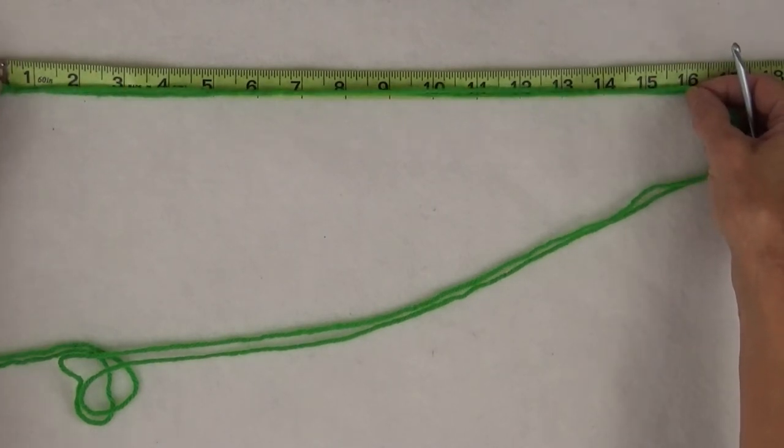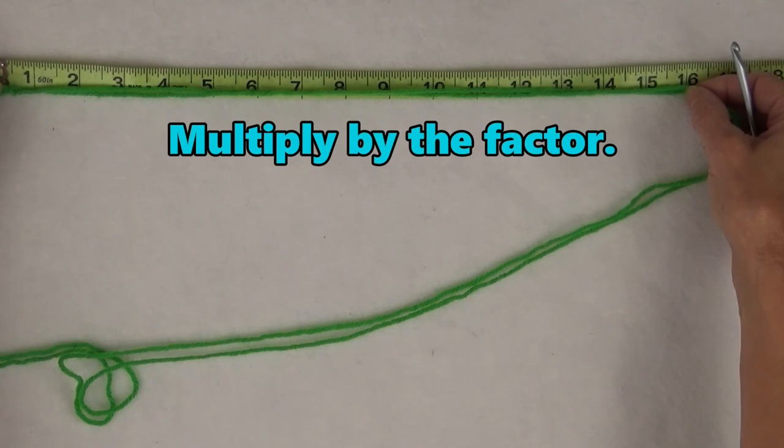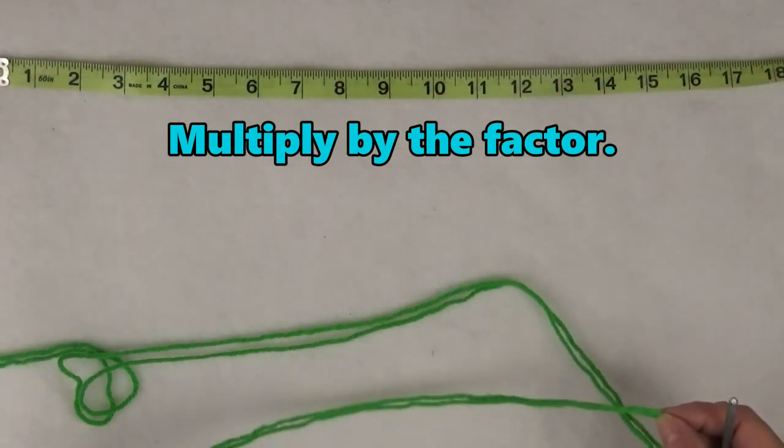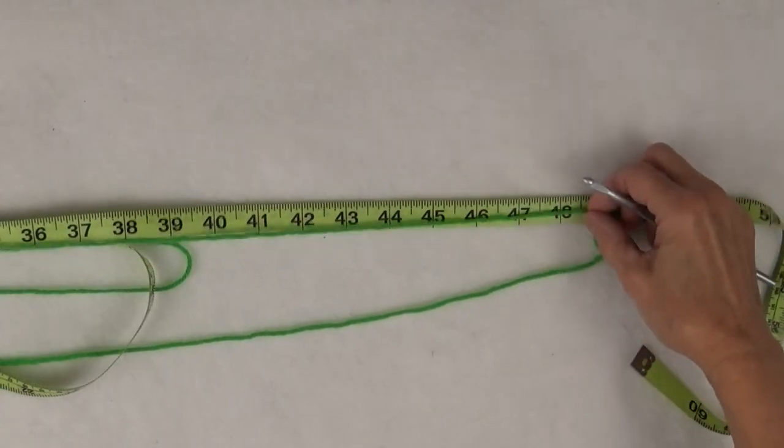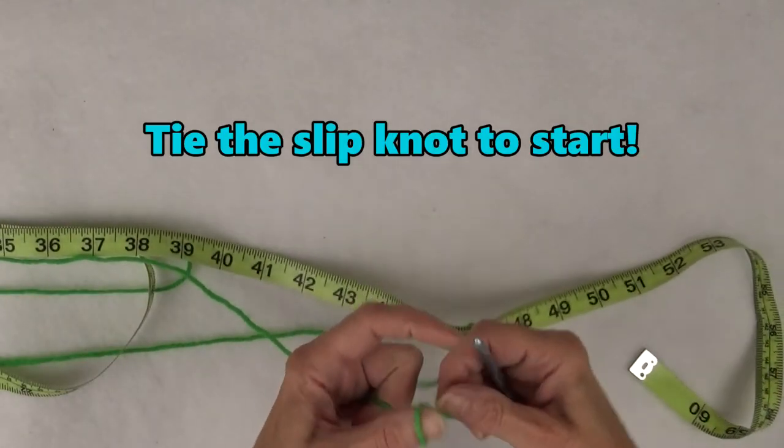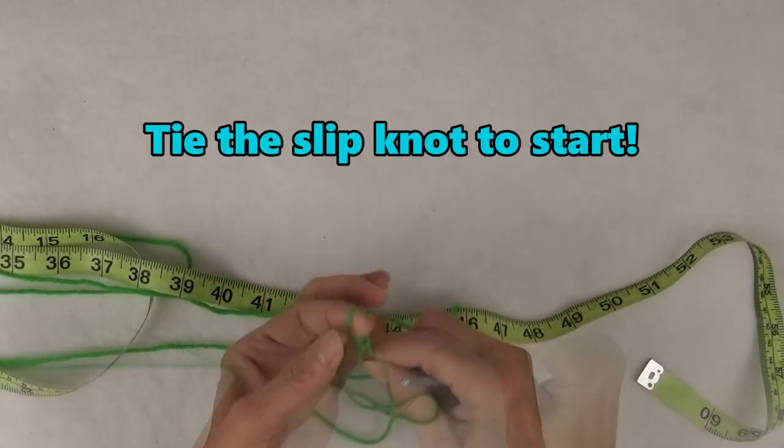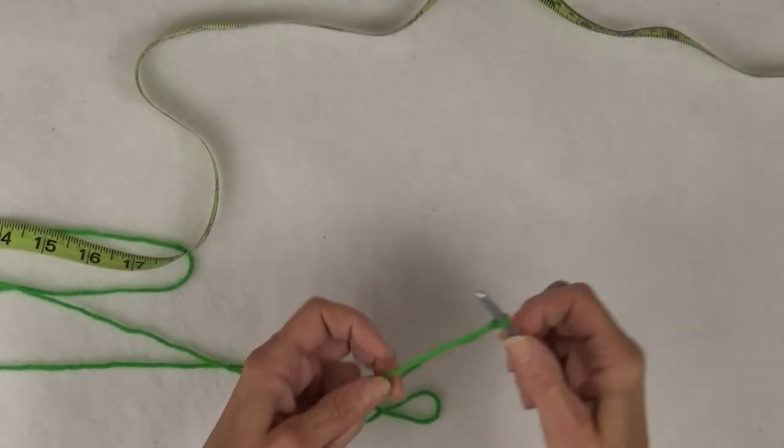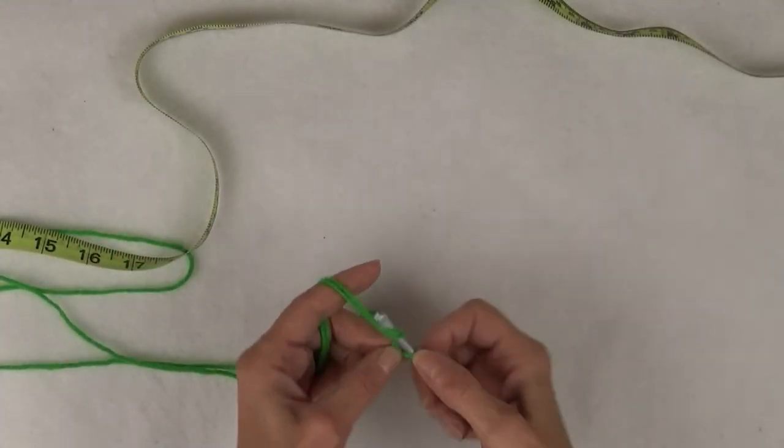Then multiply by the factor. 16 times 3 equals 48. Tie the slipknot 48 inches from the end. This should give you plenty of yarn to crochet the foundation chain, plus a few inches to spare.